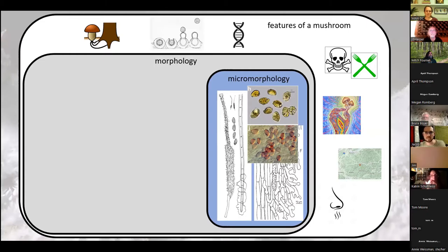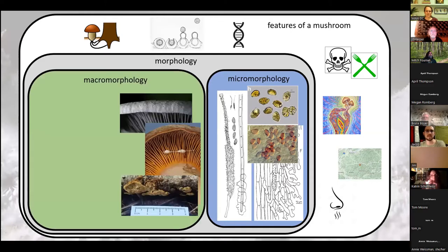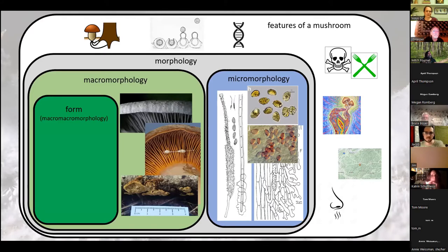There's micromorphology for microscopic features, and of course there's macromorphology for macroscopic features — the ones you can see with the naked eye. There are a lot of features still within macromorphology, a lot of subtle features. You can look at the exact cap texture, the exact consistency of latex, exact dimensions. But the most macro features, the biggest ones, are going to be the form. I think it's fun to call it macro-macromorphology because it's the biggest ones.